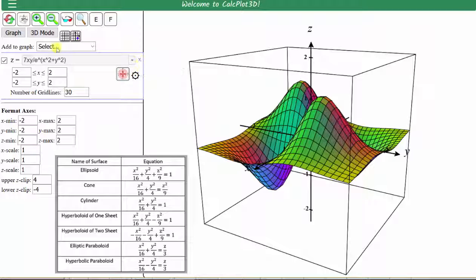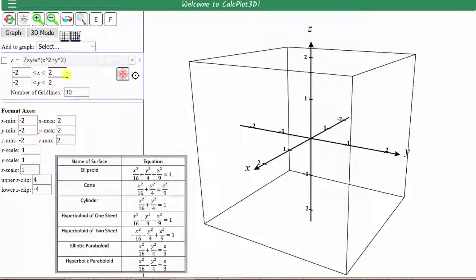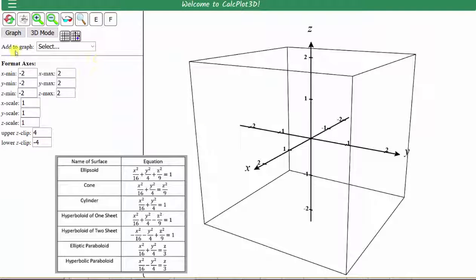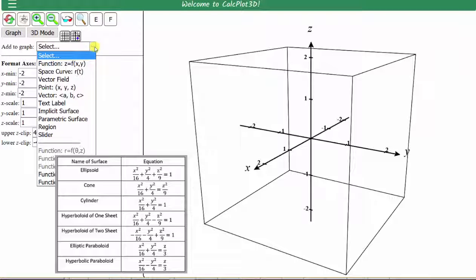But we can also clear the graph by clicking this button here. So this will clear the graph, but to delete the window, we can click this small x. And then to the right of Add to Graph, we click on the arrow, which brings up this drop-down menu, and we select Implicit Surface.